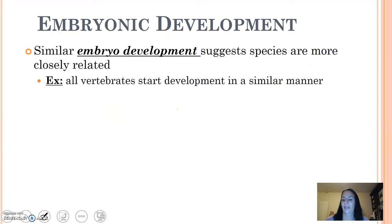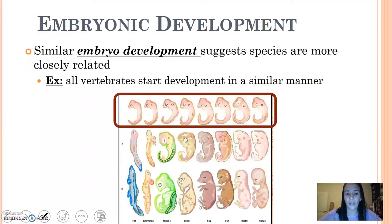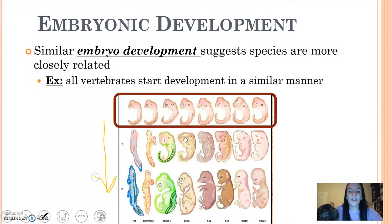Embryonic development suggests that similar embryonic development indicates species are more closely related. All vertebrates start development in a similar manner. If we look at this picture here, this shows the introduction of an embryo — these are all vertebrates — but as you see, as they move through development, they get drastically different.